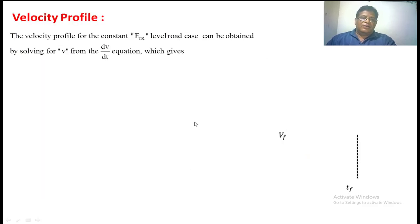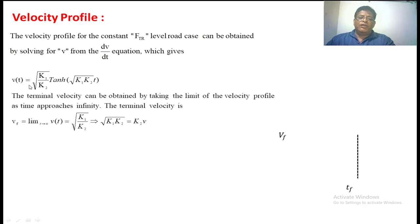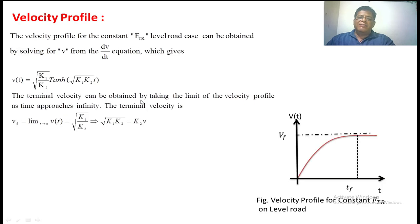The velocity profile for the constant tractive force on a level road can be obtained by solving V from the equation dV/dt = K1 − K2·V². The solution is: V(t) = sqrt(K1/K2) · tanh(sqrt(K1·K2) · t). The terminal velocity can be obtained by taking the limit as t approaches infinity, giving V_terminal = sqrt(K1/K2). This is the final velocity the vehicle asymptotically reaches.